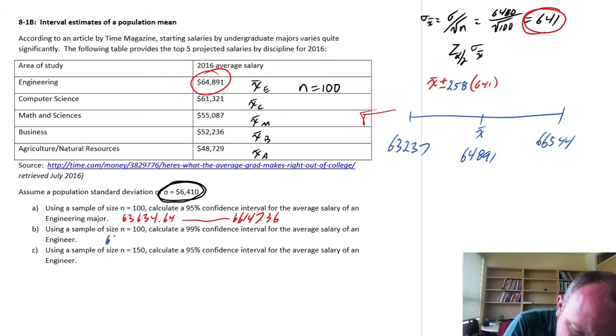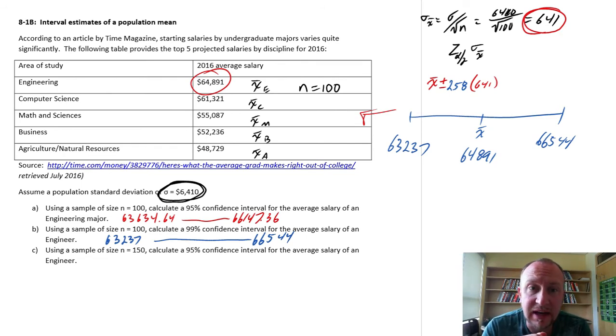So there we have our 99%. So $63,237 to $66,544. So notice that, again, when our confidence interval increased, those limits became further and further apart. I'm more confident because I've got a larger interval of numbers. So there's a greater possibility that it's between these values because they're further apart.